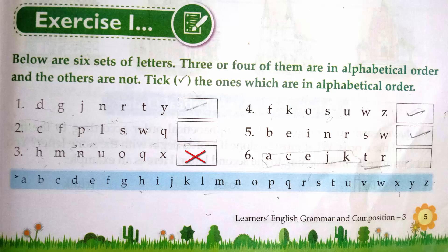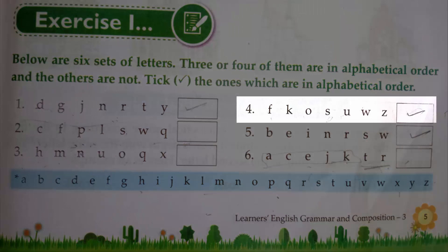Now, fourth, F, K, O, S, U, W and Z. You can see F, K, O, right, S, U, W comes after U and Z comes at last. So this is correct.